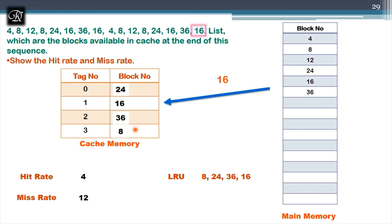The advantage of associative mapping is no conflict miss — all cache lines are utilized. However, its disadvantage is requiring more comparators (one per cache line) to check all stored tag bits simultaneously, making hardware requirements and cost higher than direct mapping.